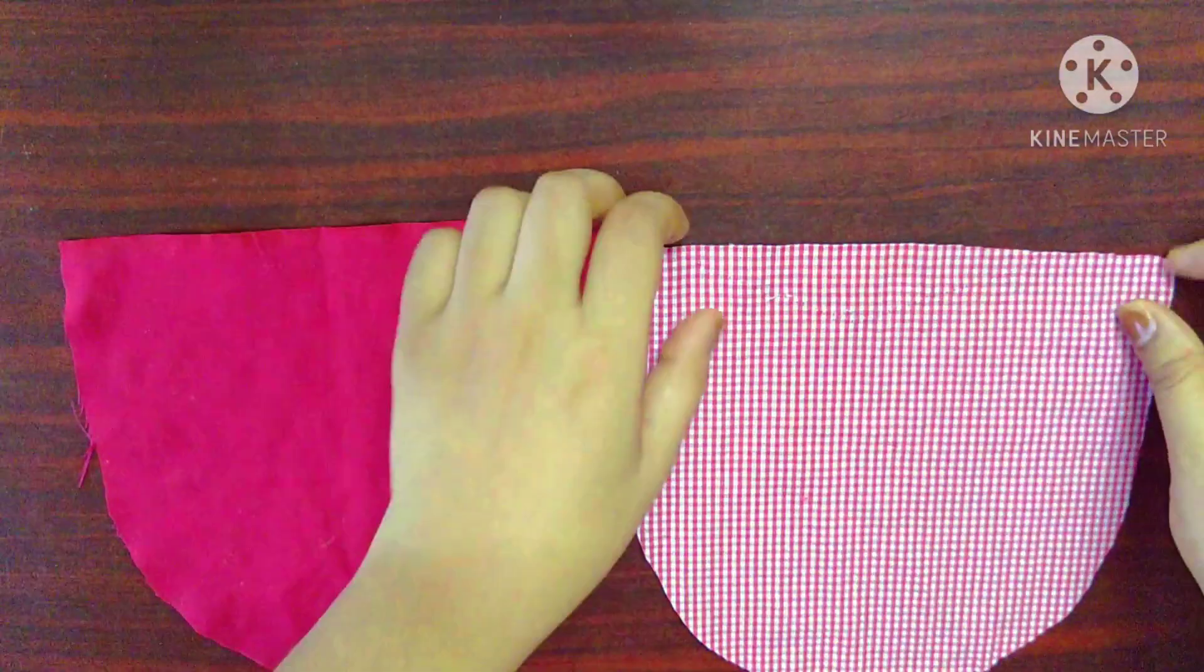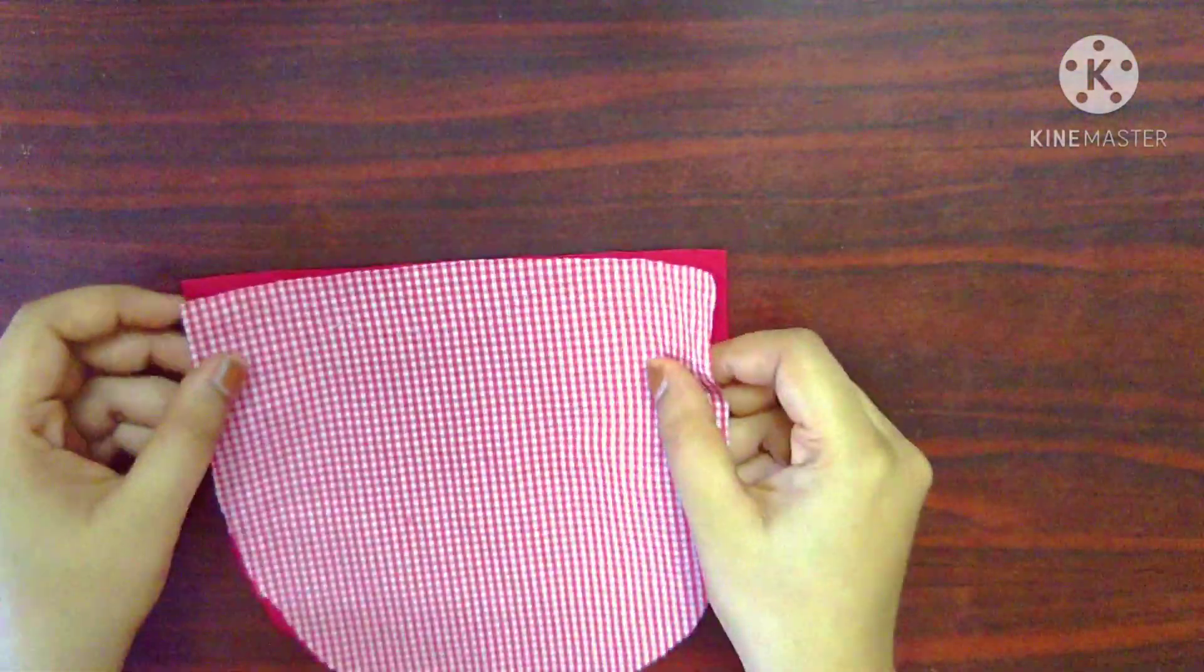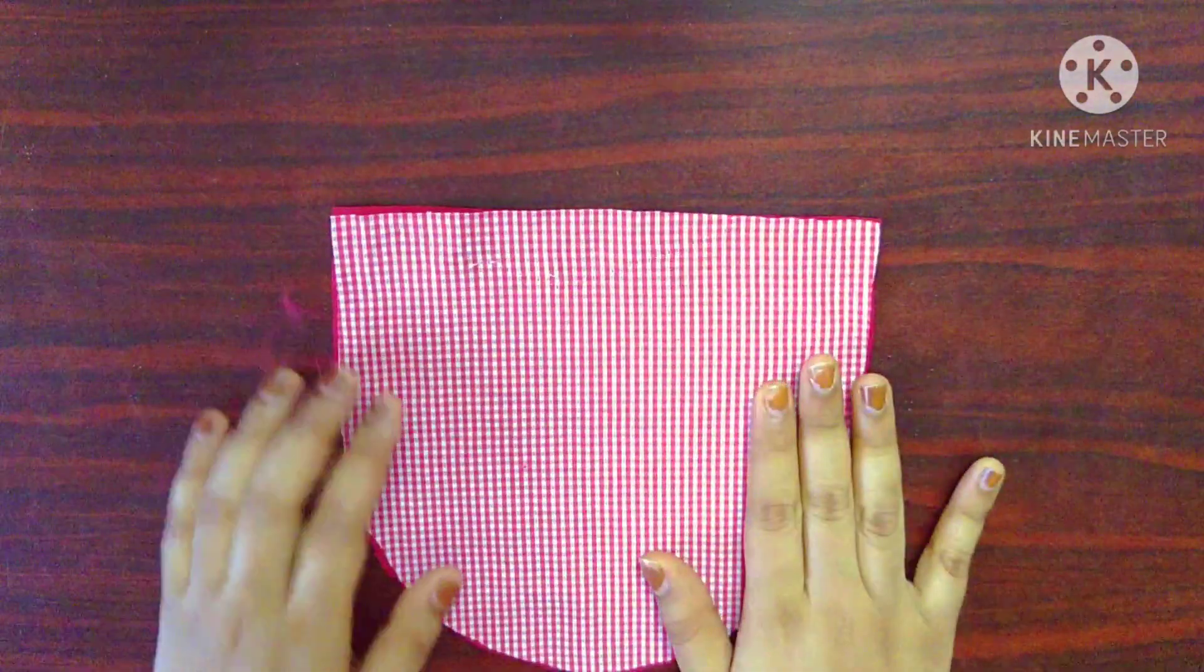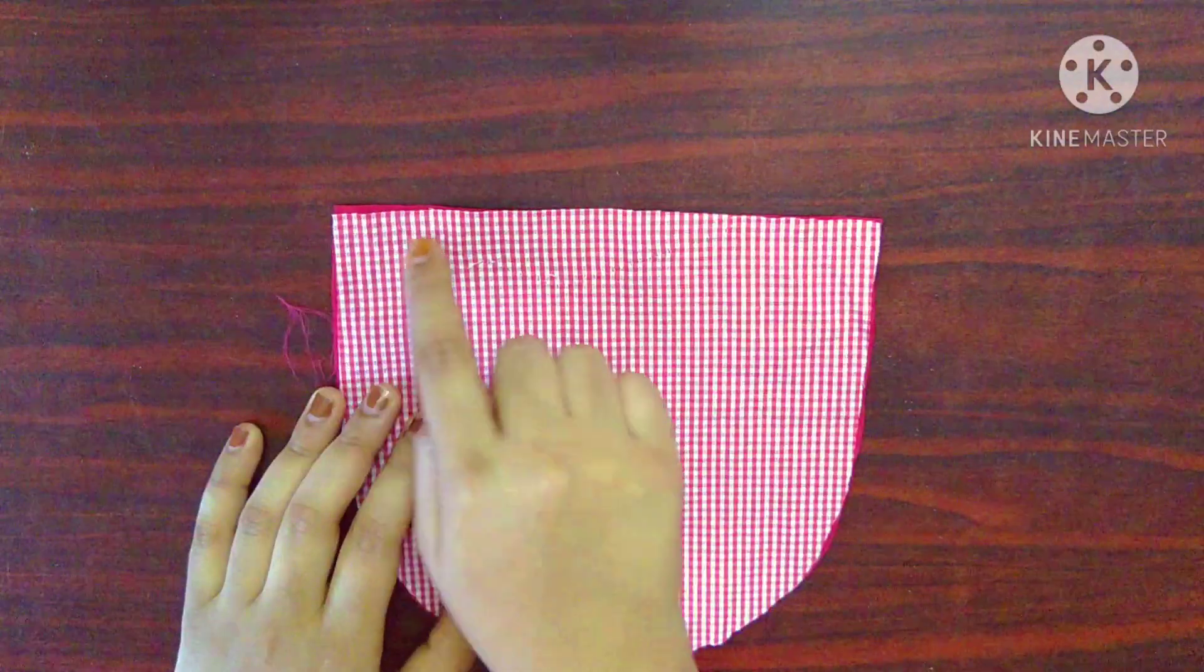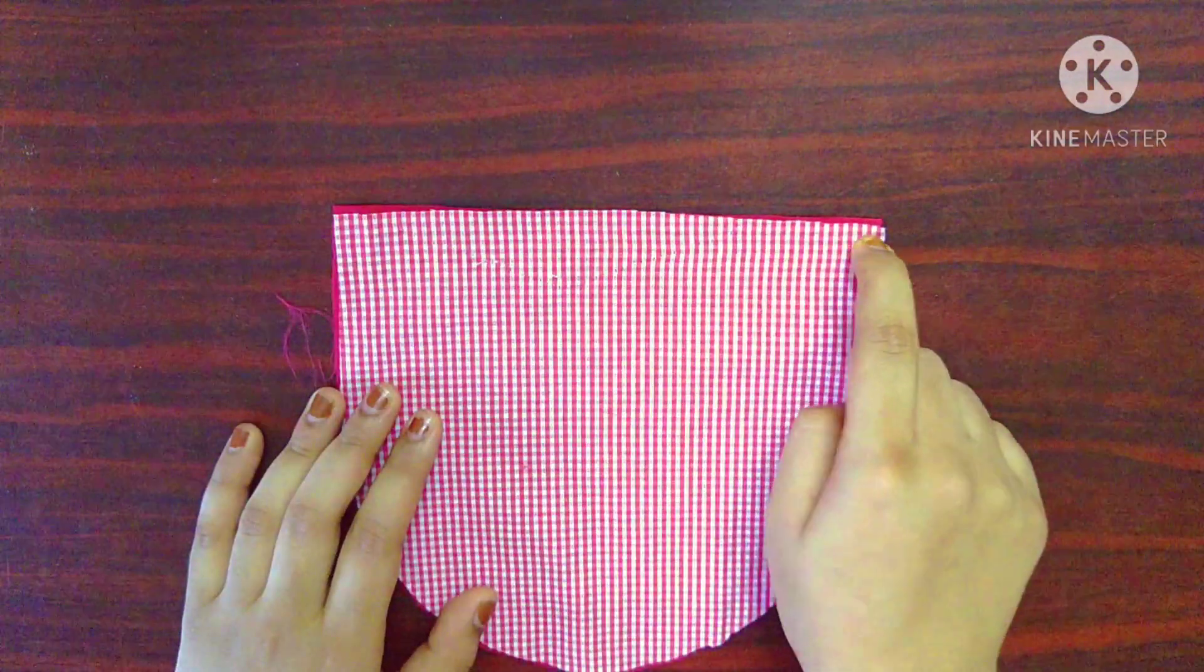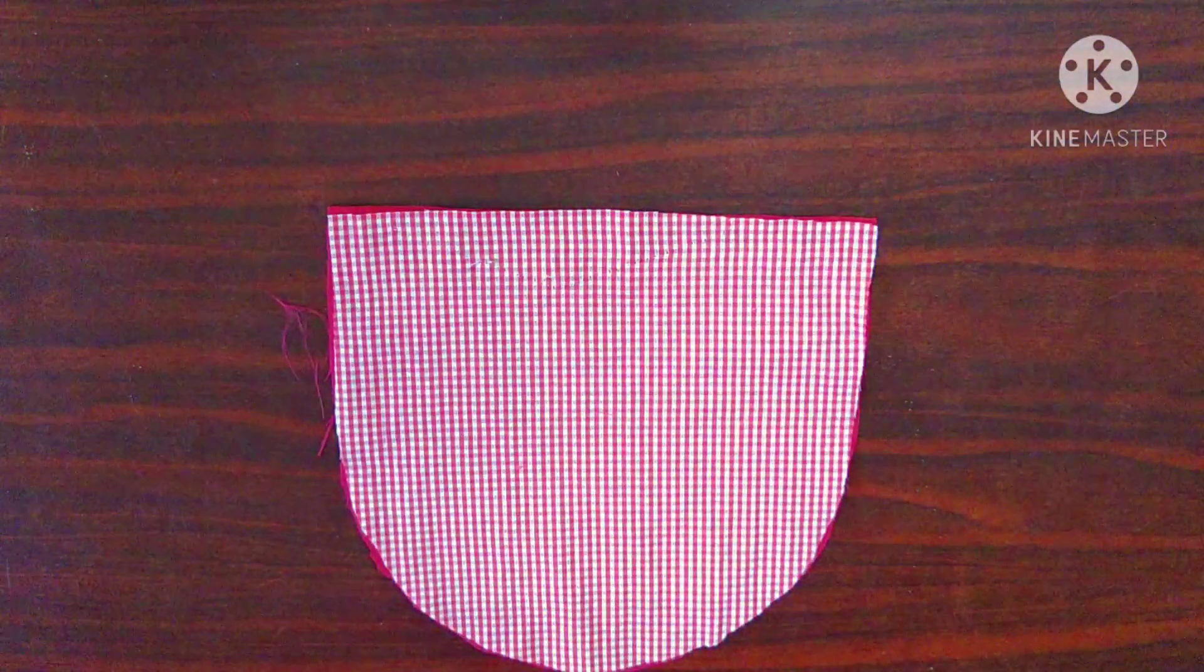First, I am going to place the main fabric on top of the lining fabric with its right sides facing each other and give a straight stitch with 1cm seam allowance. I will be repeating it for both the pieces.